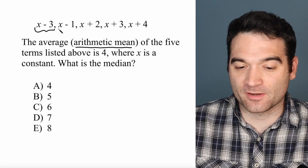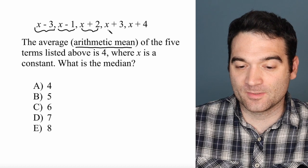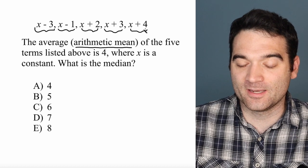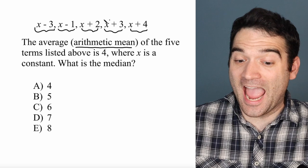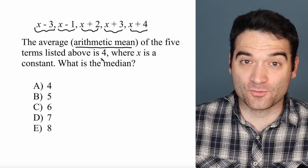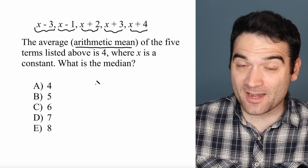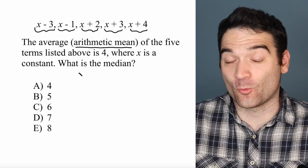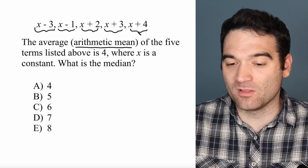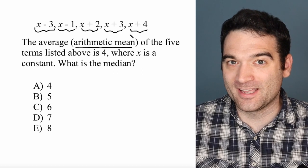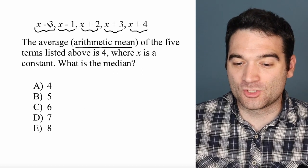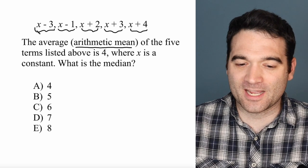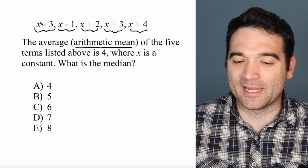So we have five terms here, and we know that the average of these five terms is 4. So we can set up that equation right now. We're going to sum all of these together, divide by 5, and we know that that equals 4. So to save some time, let's just group like terms.